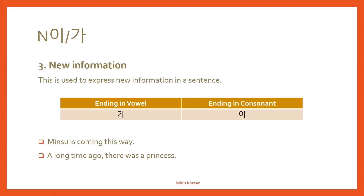The third use of 이/가: if the noun is new information, you can use 이/가. This is used to express new information in a sentence. Ending in vowel 가, ending in consonant 이. For example: 'Minsu is coming this way.' Minsu is new information — like a surprise. So: 저기 민수가 와요.